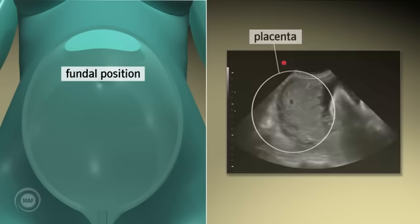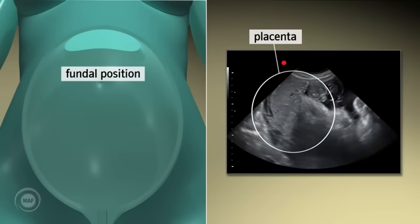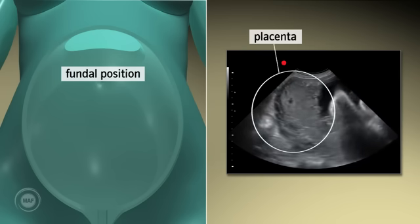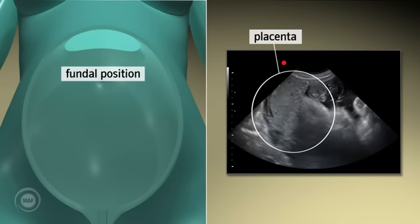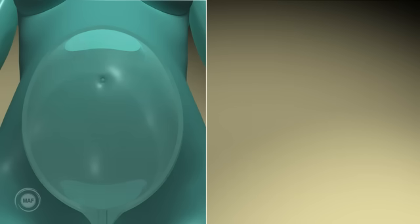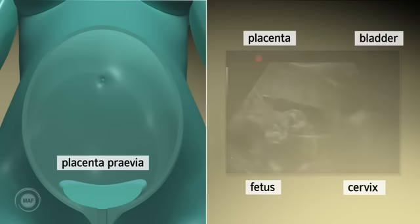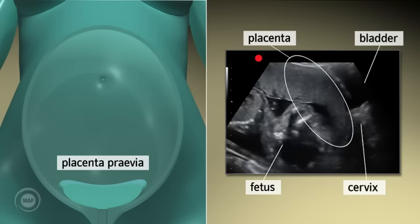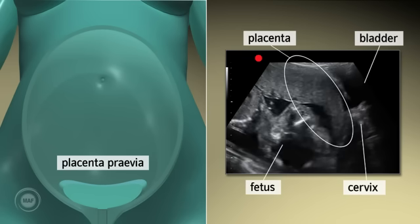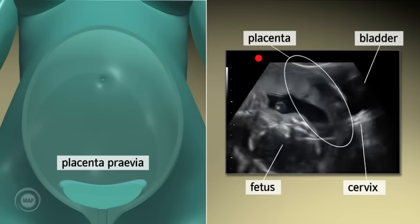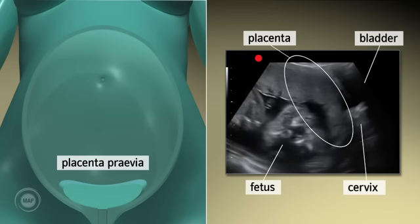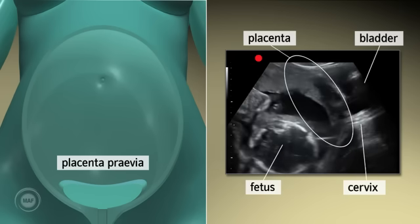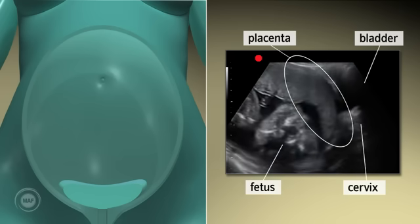Fundal position. Scanning in the longitudinal plane, the fundal placenta will be displayed on the left side of the screen. Placenta previa. Scanning in the longitudinal plane, the previa position will be shown on the right side of the screen. A low anterior placenta will appear between the bladder, which is seen at the extreme right of the screen, and the fetus on the left.